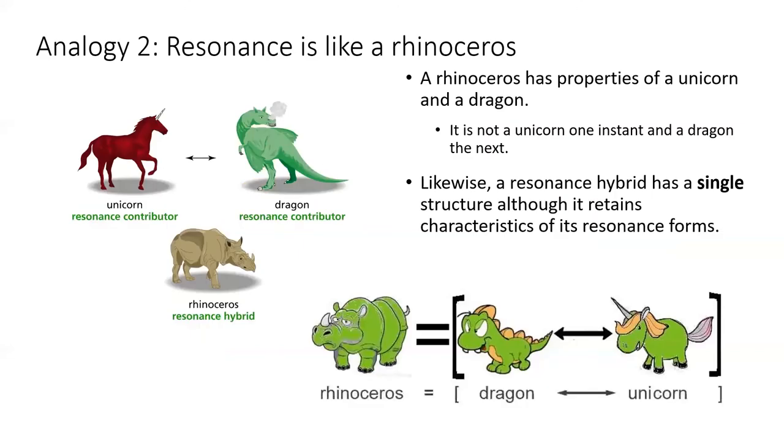In analogy two, we can think of the resonance hybrid like a rhinoceros. A rhinoceros has some properties of a unicorn, like a single horn on the center of its head. A rhinoceros also has some properties of a dragon, like thick armor and the ability to fly and breathe fire. But a rhinoceros is not a unicorn, nor is a rhinoceros a dragon. Nor is it rapidly switching back and forth between a unicorn and a dragon.